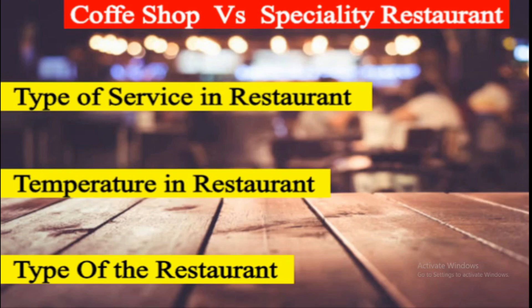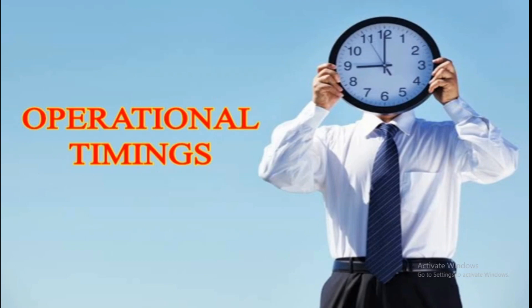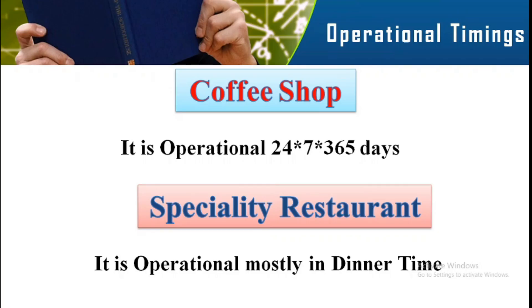The first parameter is timing. The coffee shop is operational 24 hours, 7 days a week, 365 days — there is no stoppage. But the specialty restaurant is basically operational only during dinner time.